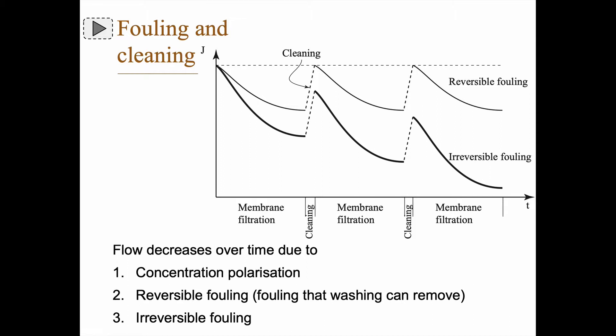Choosing membranes and operating conditions that reduce fouling is a whole science of its own, as are cleaning methods, because you want something that removes all the fouling but keeps the membrane intact. In fact, sometimes you use your filter, you clean it, and suddenly you get a higher flux than you had initially — that's not a good sign. What probably happened is that you destroyed the membrane, so something is leaking, and there could be a crack or something else.